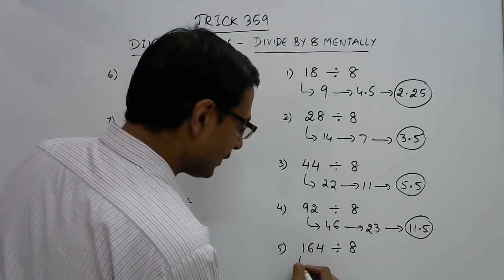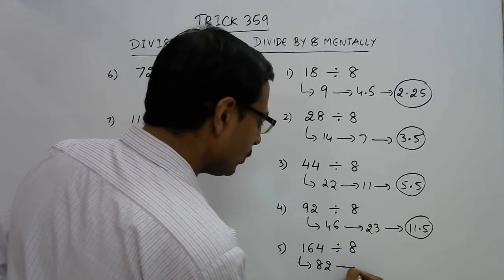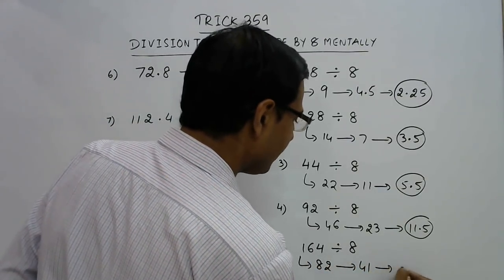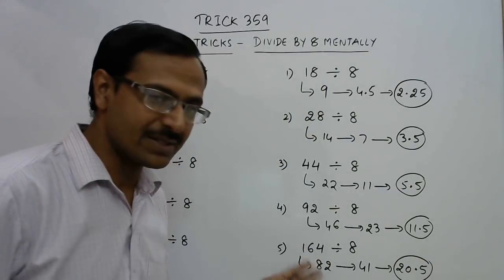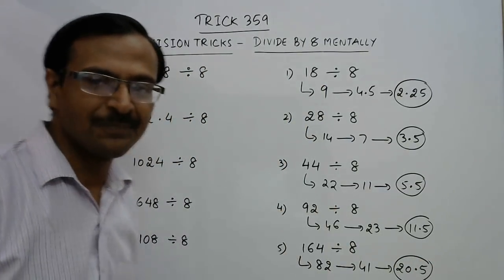164 becomes 82, 82 becomes 41, 41 becomes 20.5, which is the quotient on dividing 164 by 8. More examples now, decimals this time.